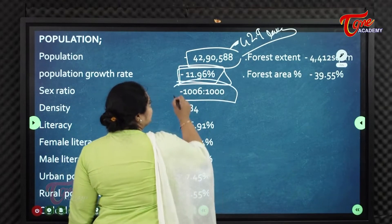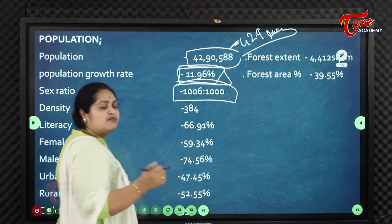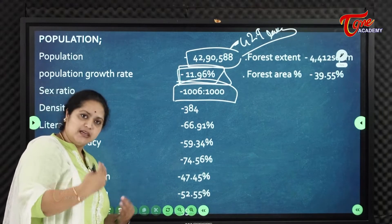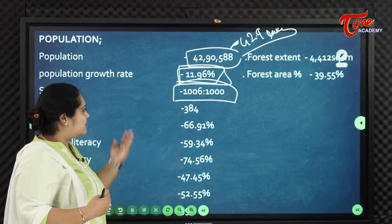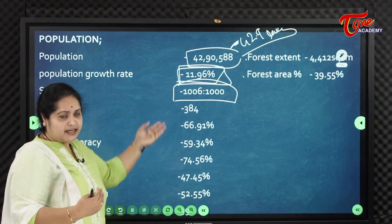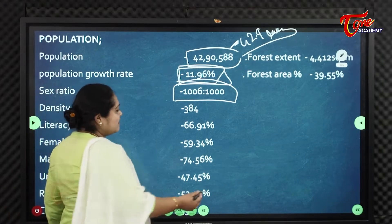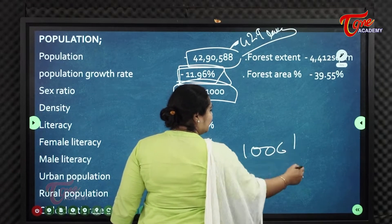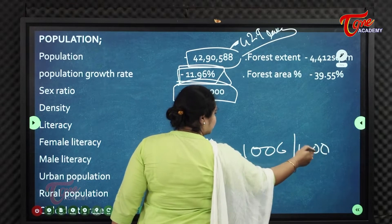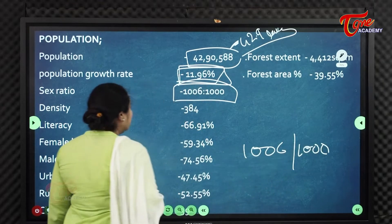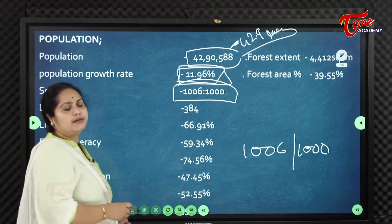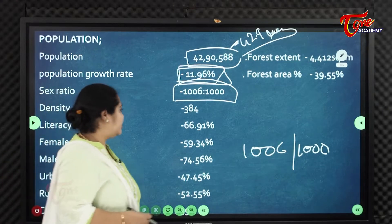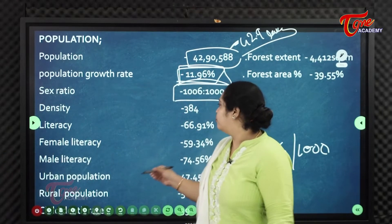The sex ratio is 1006 females per every thousand males. This is a good sex ratio. The density of population is 384 per square kilometer.